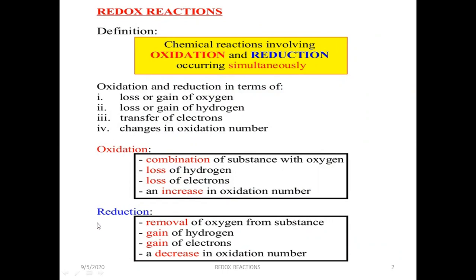Here is a summary of what oxidation and reduction mean in terms of all four things. Oxidation is the combination of a substance with oxygen, or loss of hydrogen, or loss of electrons, or an increase in oxidation number. Whereas reduction is the removal of oxygen from a substance, gain of hydrogen, gain of electrons, or a decrease in the oxidation number.